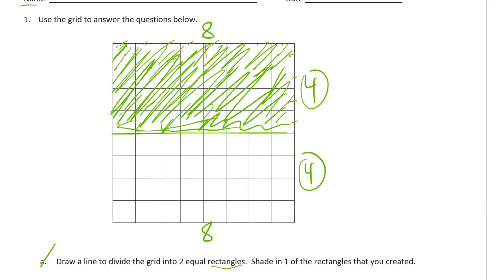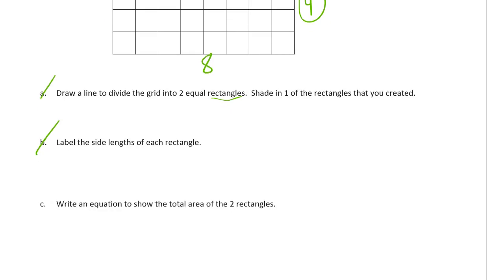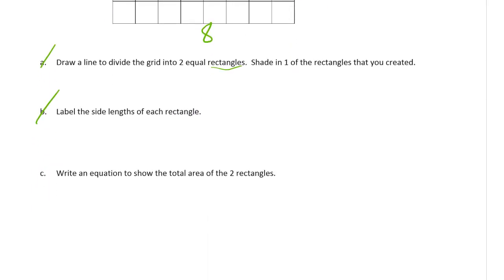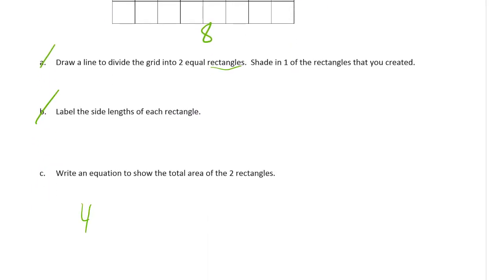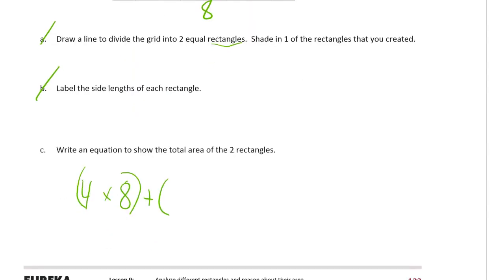We could write four times eight plus four times eight. Right? Because the first rectangle, the shaded one, is going to be four times eight. And then we're going to add, I'm going to put that in parentheses, add that to the one that's not shaded, which is also four times eight.